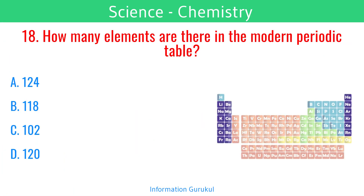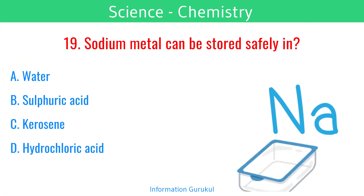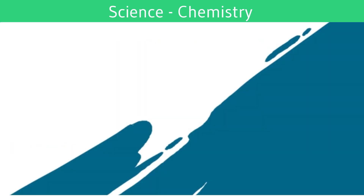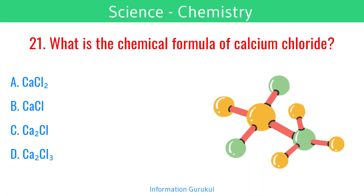How many elements are there in the modern periodic table? 118. Sodium metal can be stored safely in kerosene. How many elements occur naturally? 92. What is the chemical formula of calcium chloride? CaCl2.